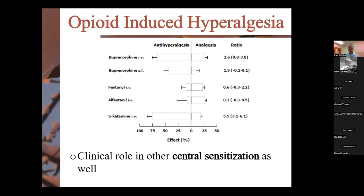Looking at a comparison of buprenorphine to fentanyl and S-ketamine: buprenorphine does have some analgesic effect, but there's a much stronger anti-hyperalgesic effect — almost up there with S-ketamine. So think of buprenorphine when you're seeing anybody with neuropathic pain, hyperalgesia, or central sensitization. There may be a clinical role in cutting down on central sensitization which allows for this anti-hyperalgesic effect.